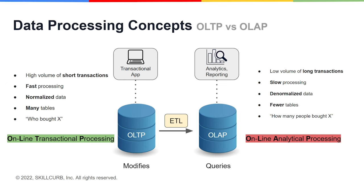Last comes the elephant in the room that you can see in the center of the screen, called ETL. ETL stands for extract, transform, and load. ETL processes are used to take the data from the OLTP system and move it over to the OLAP one.